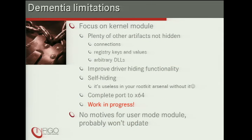Dementia has limitations. It's not currently hiding connections, registry keys, or values. You cannot hide arbitrary files or DLLs. Thread hiding and driver hiding can both be improved. One functionality Dementia currently lacks is self-hiding — without it, it's useless in a rootkit arsenal. It's possible to specify Dementia's own user mode and kernel processes, but it's not real self-hiding. Porting it completely to 64-bit without crashes is also a work in progress.